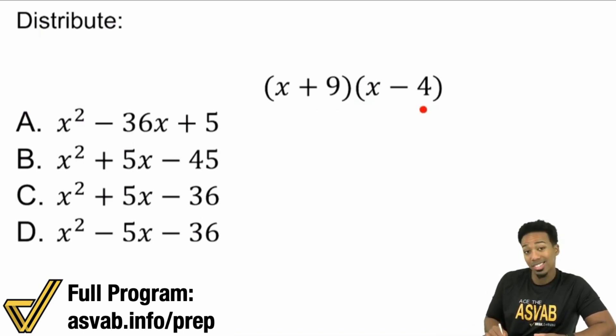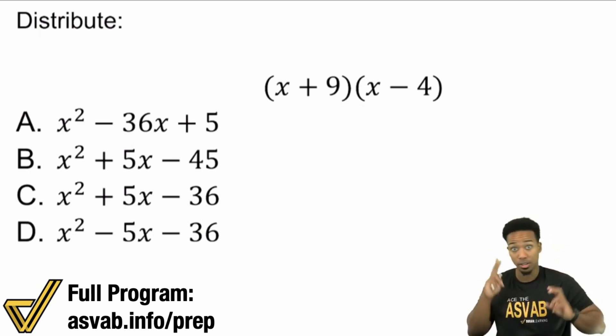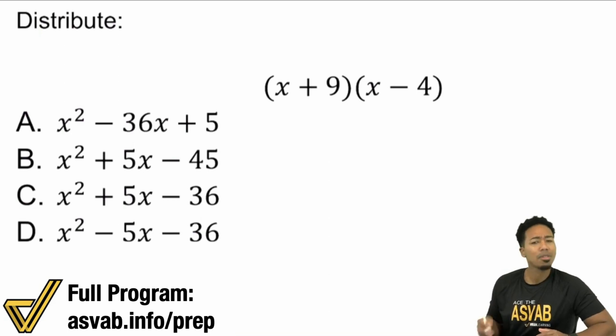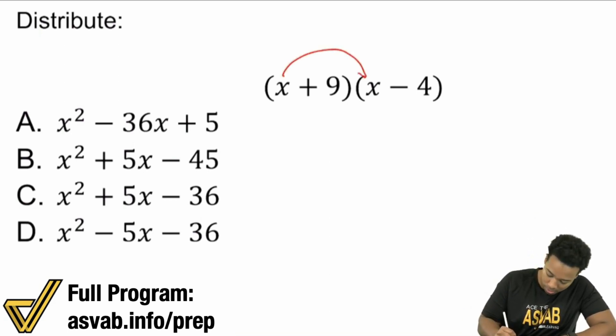When it comes to 2 by 2s like this, you might recognize this as foil. First, outside, inside, last. You may think of it like that too. But here's the thing. The main idea is this. Just make sure that everything from one parentheses multiplies with everything from the other.